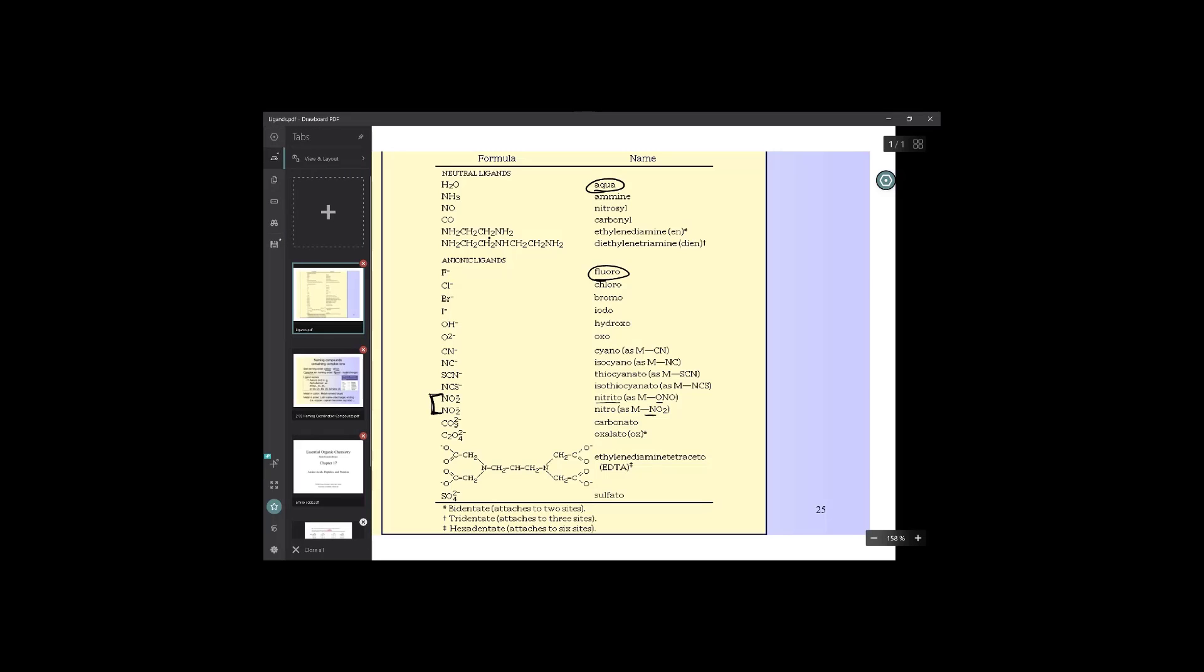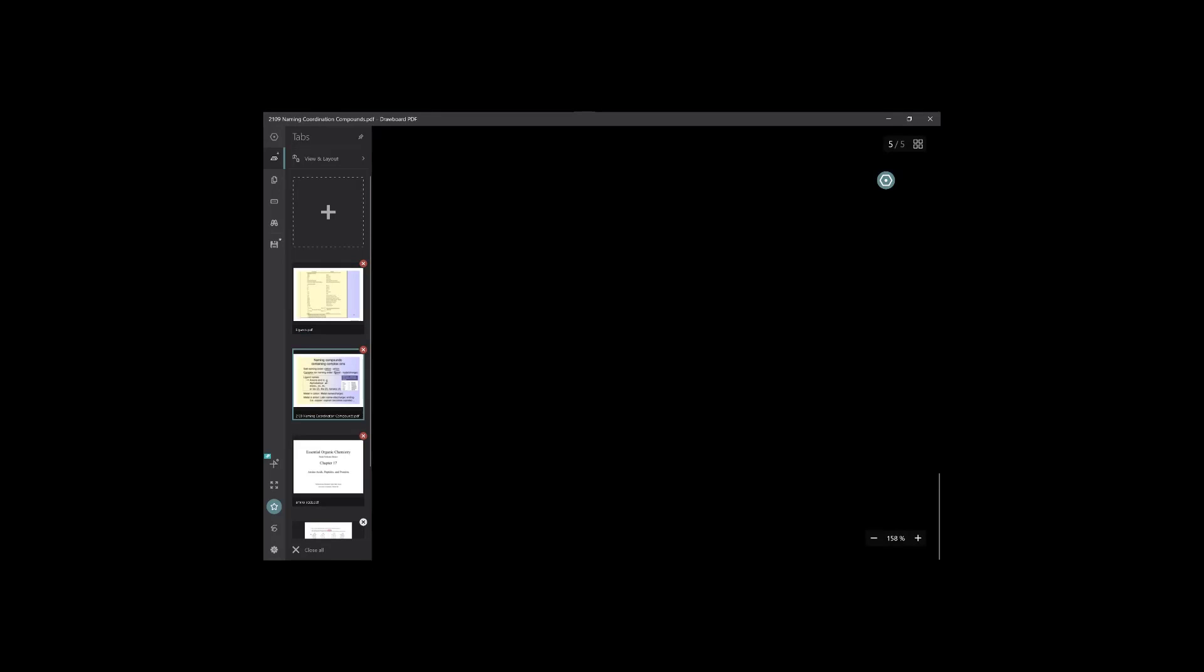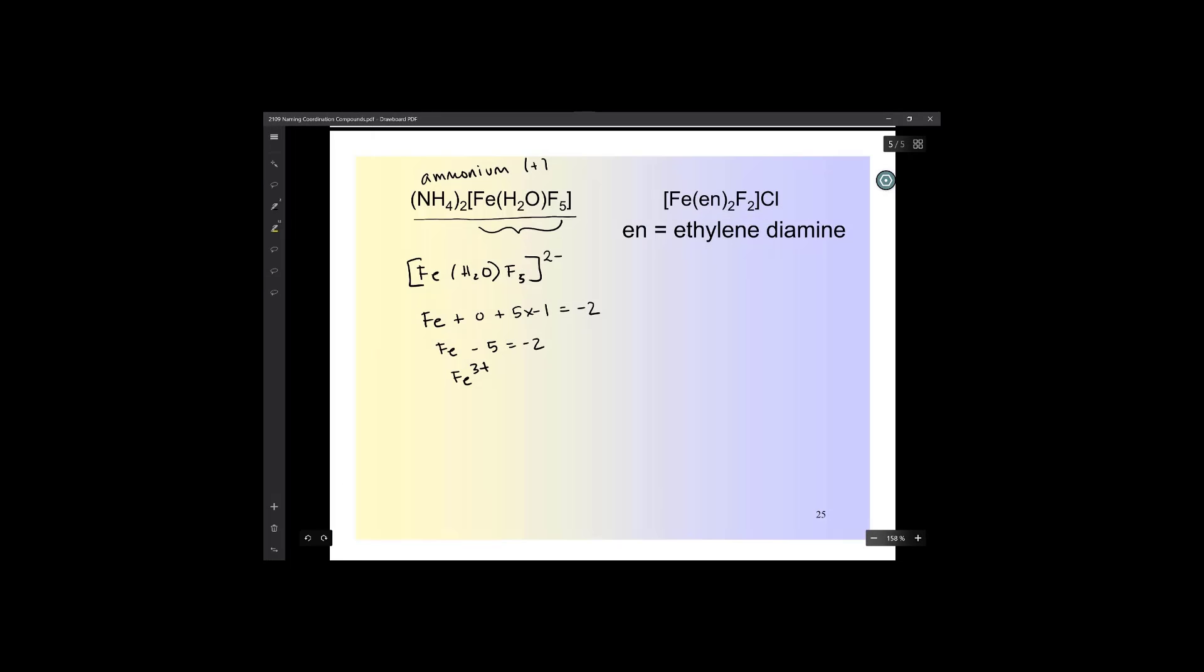So F and A, so the A will come first, so it'll be aqua, and then five would be penta, fluoro, and then iron. And so since the complex ion has a negative charge, it's an anion, then we have to say ferrate.